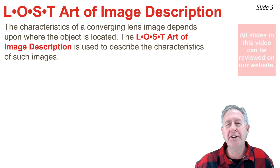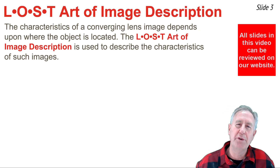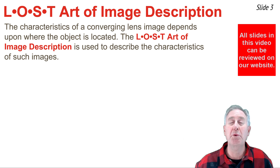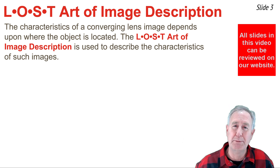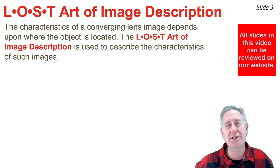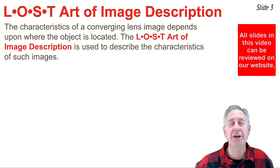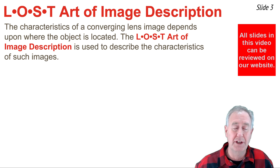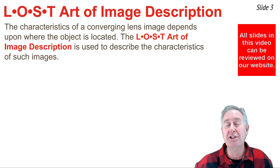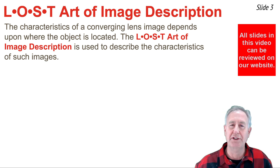The characteristics of a converging lens image are dependent upon where the object is placed. In this video, we'll learn how to apply the lost art of image description in order to describe such images. LOST is a mnemonic to help us remember the four characteristic traits of images.